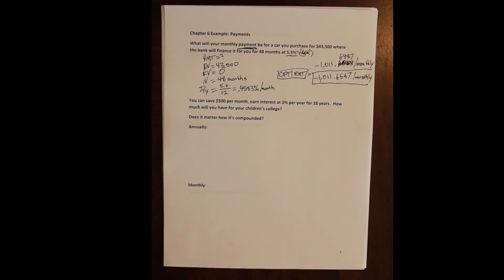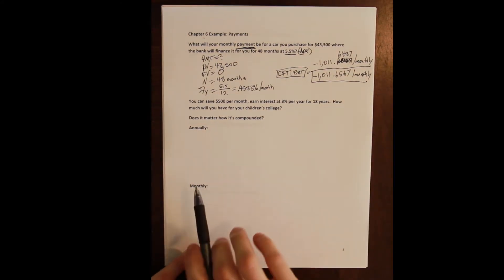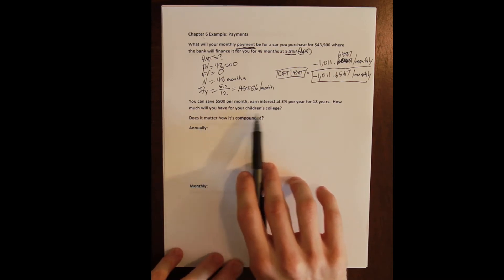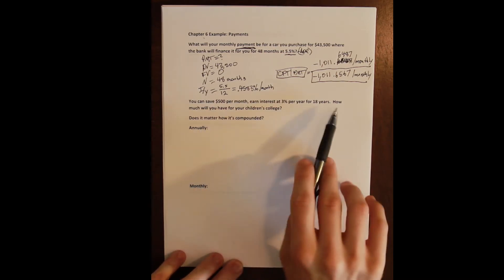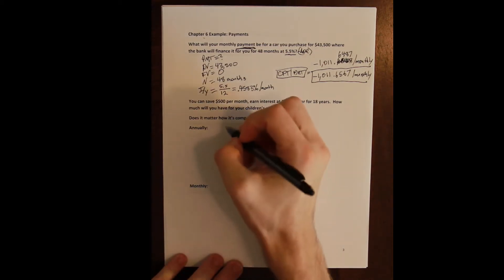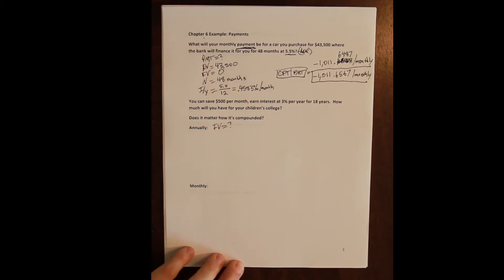And what we're asking for is: how much money is going to be in the account in 18 years? How much will I have for my children's college 18 years from today? Which means I am trying to solve for a future value. How much am I going to have in the future?